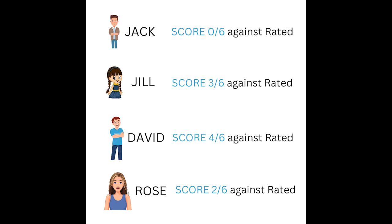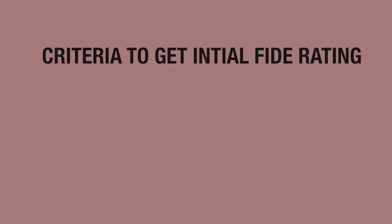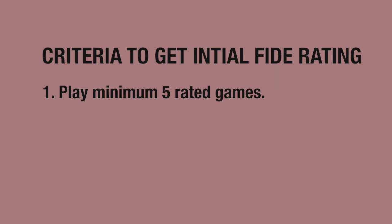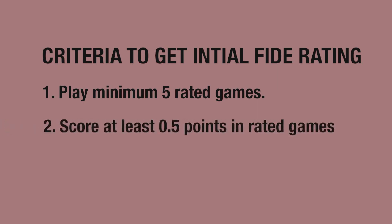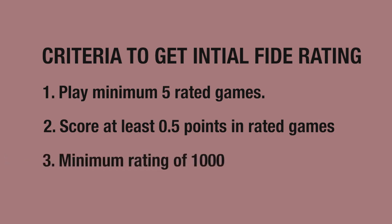Now, in each of these scenarios, let us understand how the rating was calculated. The criteria to get an initial FIDE rating are: 1. Play minimum 5 rated games. 2. Score at least 0.5 points in rated games. And 3. Minimum rating of 1000. Rated games are basically games played against rated opponents. Games against unrated players are not counted for the calculation of initial FIDE rating. Once you have played minimum 5 rated games and scored at least 0.5 points, your performance is considered for rating calculation, and if your rating comes to 1000 or above, you will get your initial FIDE rating.